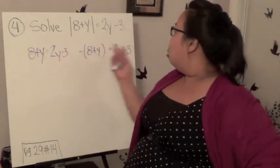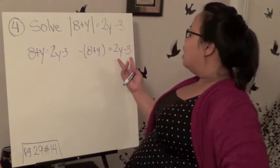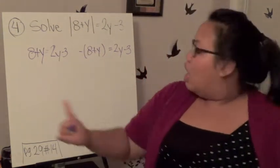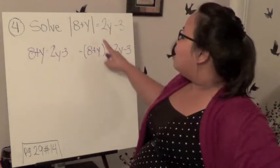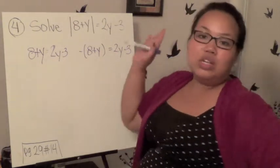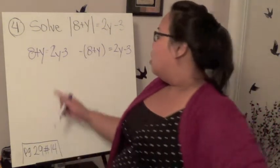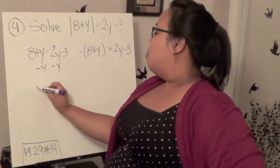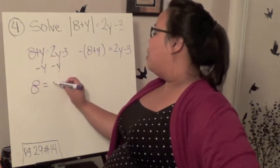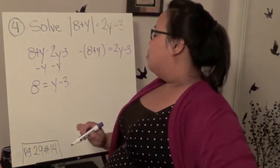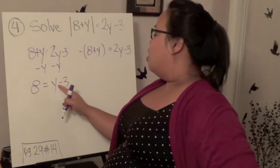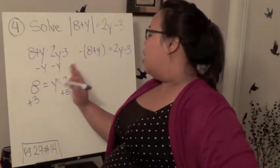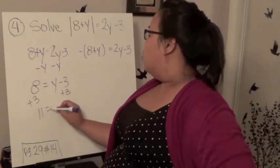In order to get rid of the absolute value, I have to represent both a positive and a negative. It doesn't matter which one, as long as I have two equations and both positive and negative are represented. Once I have that, I solve it just like any other algebraic problem. Here I'm going to isolate y by subtracting y from both sides. I end up with y minus 3. Then I add 3 to both sides. This gives me 11 equals y.